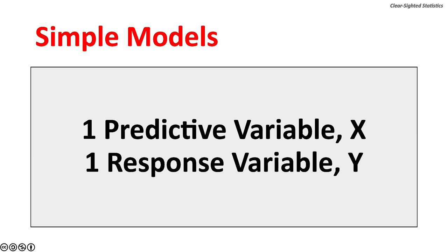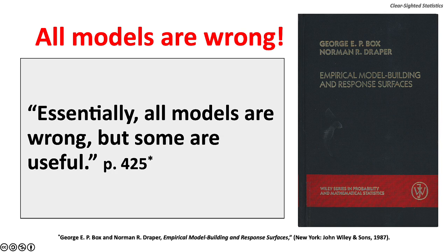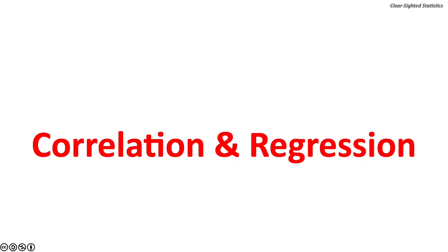Linear regression models are very simple: one predictive variable and one response variable. As George E.P. Box and Norman P. Draper wrote, remember that all models are wrong — the practical question is how wrong do they have to be to not be useful. They repeated this at the end of their book: essentially all models are wrong, but some are useful.